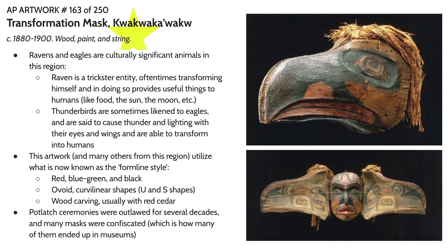This particular artwork, as well as many others from the Pacific Northwestern region, utilizes what is now known as the form line style. This style uses black, blue, green, and red — the primary colors of this particular culture, dictated by the materials available. There are also lots of ovoid or oval-shaped motifs, as well as U and S-shaped motifs present in the form line style. The Kwakwaka'wakw tribe probably doesn't call it the form line style — this was actually a term defined in the 1960s. A lot of the work from this region utilizes wood carving, usually with red cedar, which is a harder, more specialized material. These objects would take many seasons to shape properly, and shaping was made easier after contact with the introduction of metal materials.